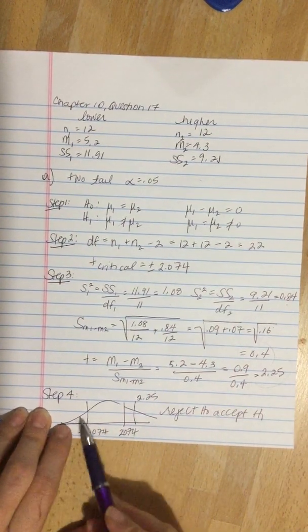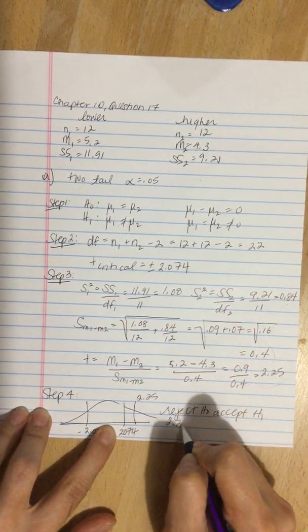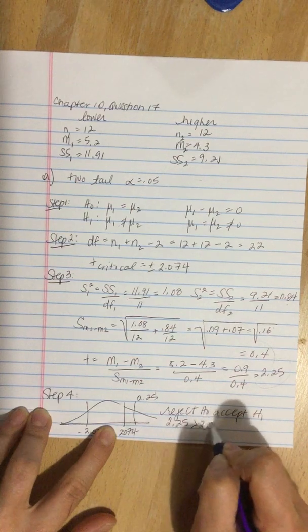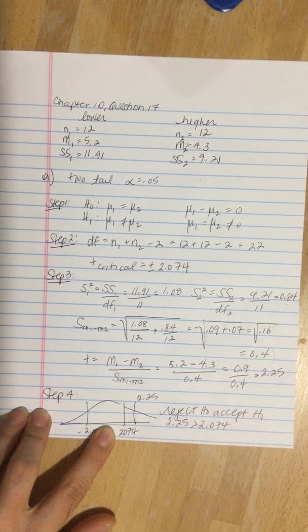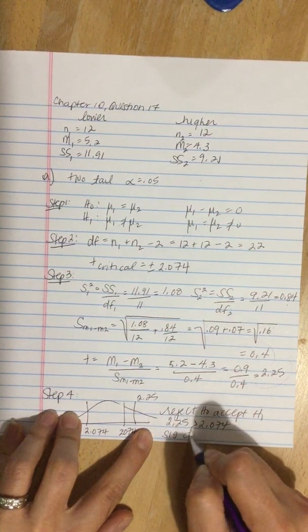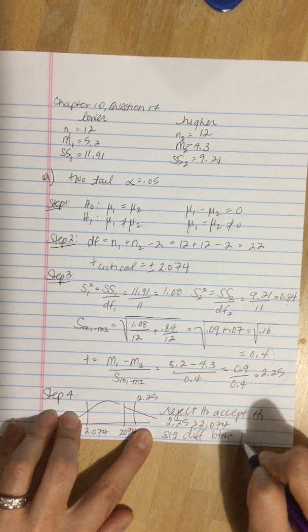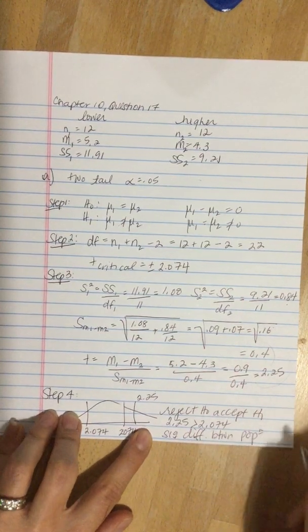Our evidence is right here with our diagram. Alternatively, you could say that 2.25 is greater than 2.074, and there is a significant difference between populations.